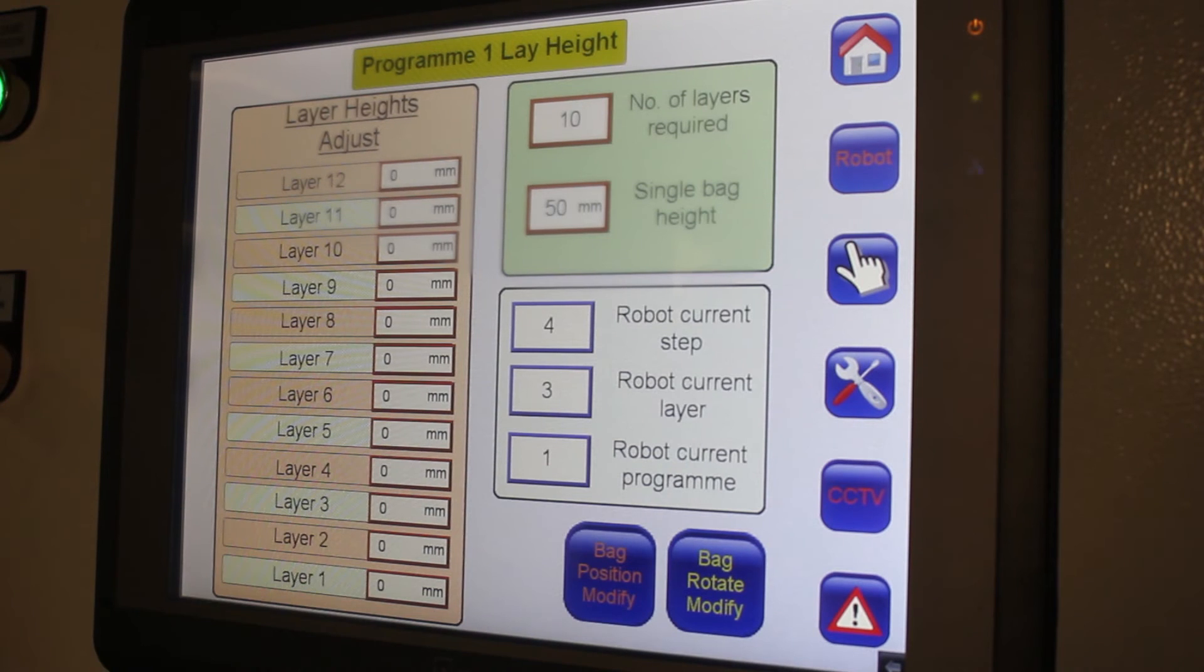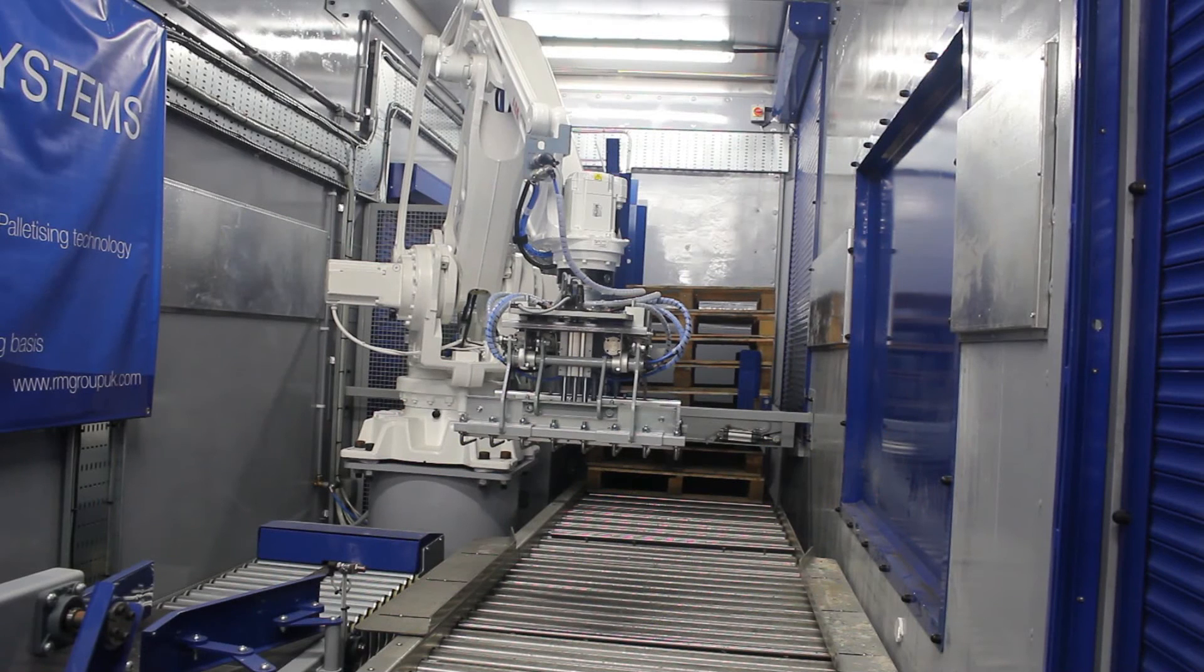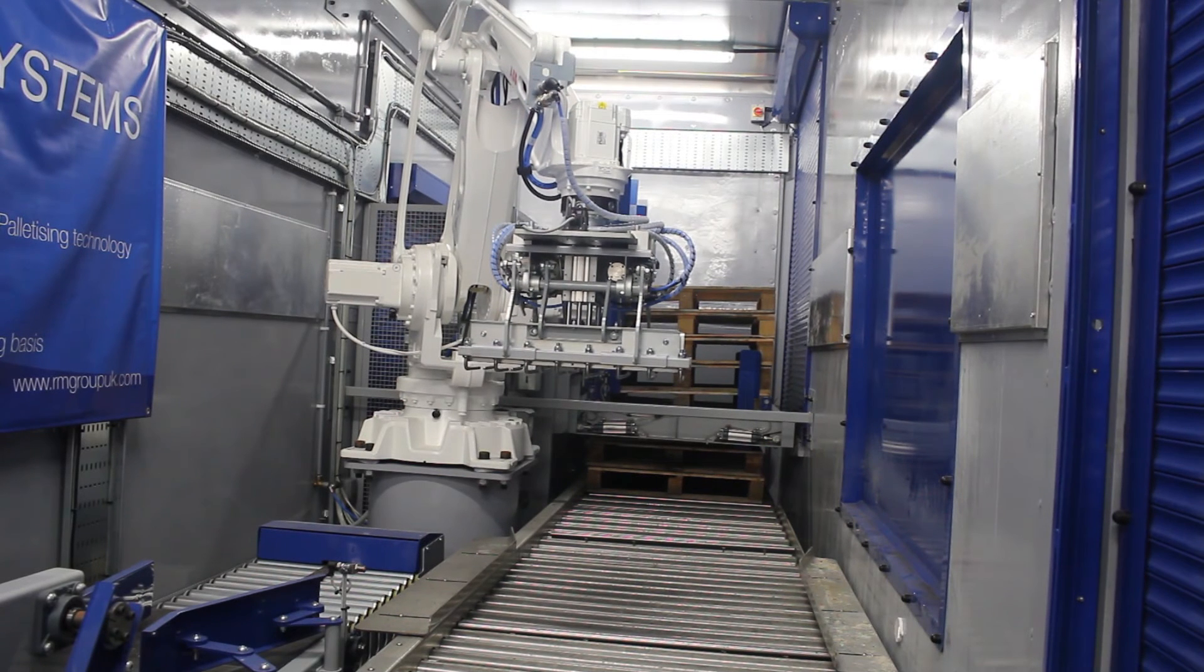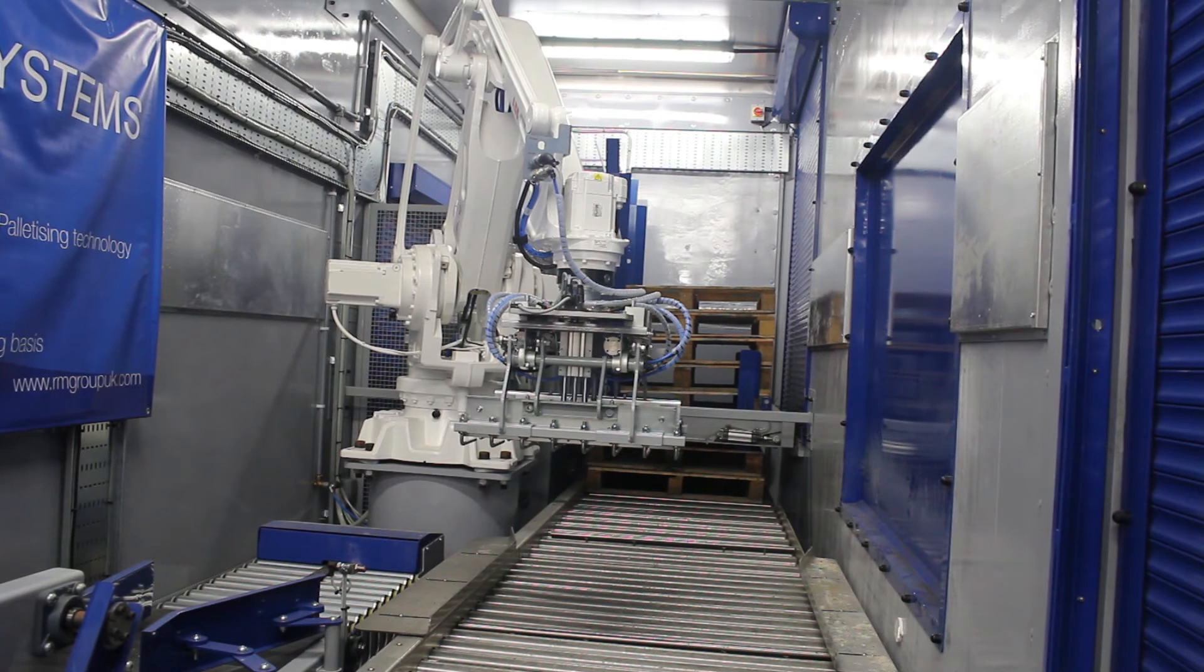Again, you want current layer. So current layer now is on three. So if you want to increase that a little bit, you can increase it. If you want to decrease it, you can minus it by 20mm, 30mm, whatever you need to do.